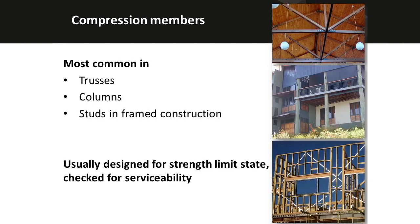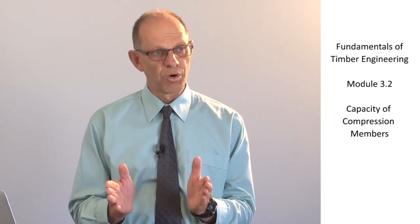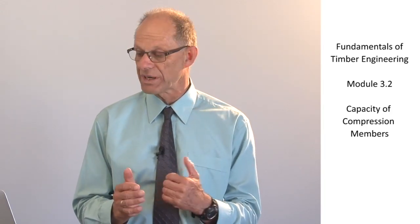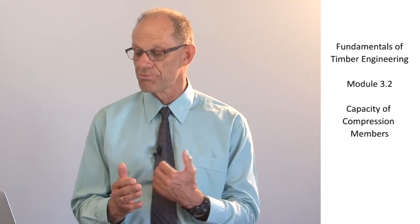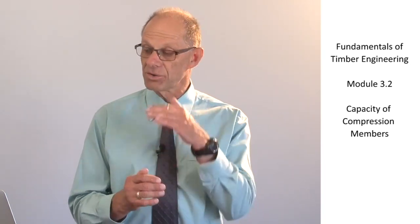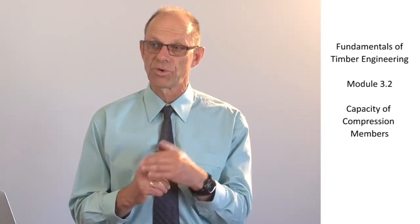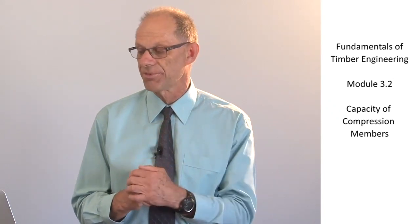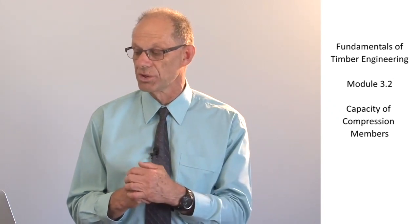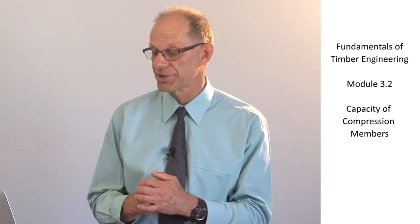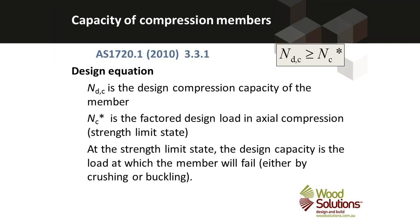Compression members can be found in a lot more places than tension members. They're most common in trusses, but they can also be found in columns and studs in wall frames. In a wall frame, a stud transmits wind loads through bending actions, but they also transmit the weight force of all of the elements that sit on top of the wall, and they do that in compression.